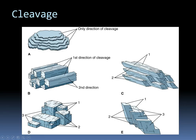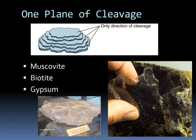When we describe cleavage, we describe it in terms of planes of cleavage — how many parallel surfaces you have. Minerals with one plane of cleavage will always break along one parallel surface. Really common minerals with one plane of cleavage are biotite and muscovite, known as micas, which peel off into really thin little sheets. Another mineral with one plane of cleavage is gypsum, which isn't quite so thin.